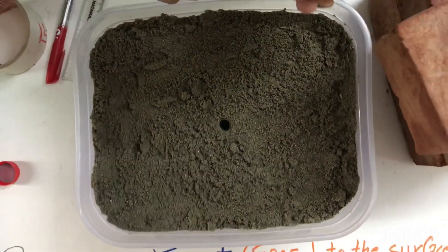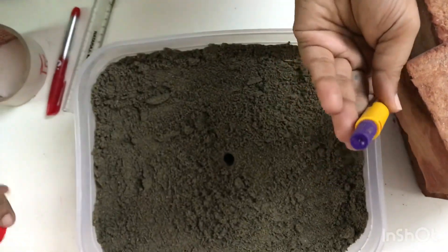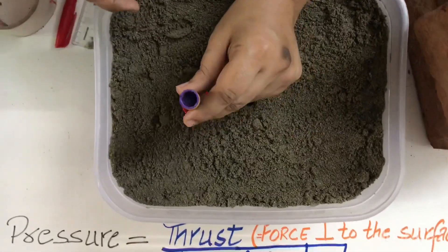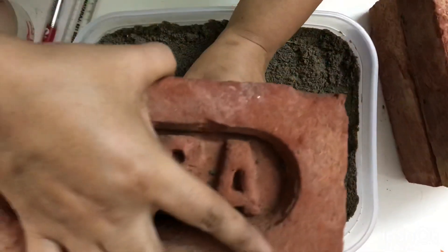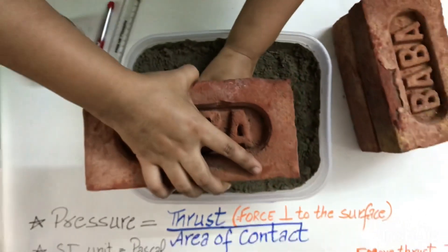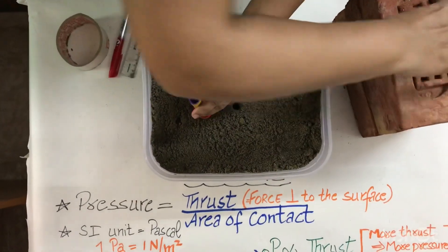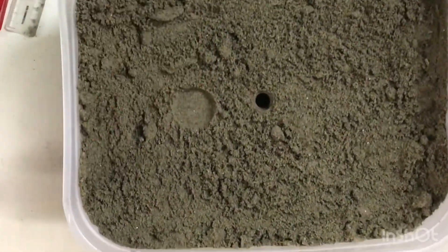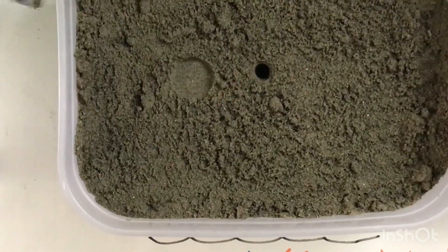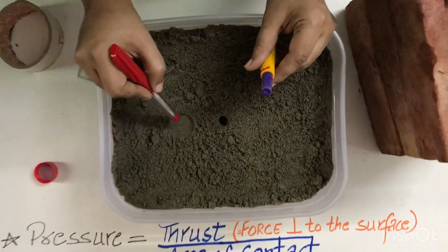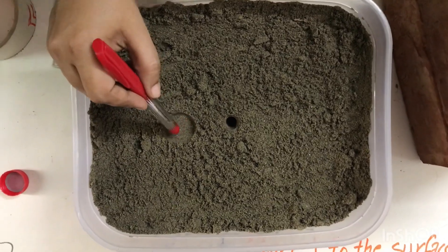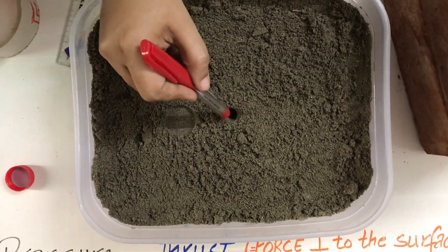Now I am changing the surface area of contact. I am using this cap, putting it over the pen. I will apply the same amount of thrust — only one brick. Let's see how much depression it makes in the sand. Removing it — you can easily see the difference between the two. The pressure applied on the smaller area is much larger compared to the pressure applied on a larger area. More area means less pressure; less area means very high pressure.